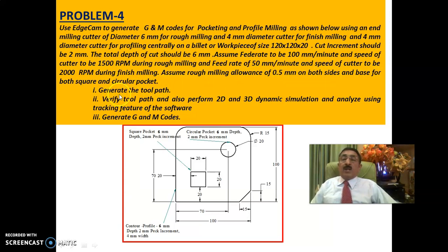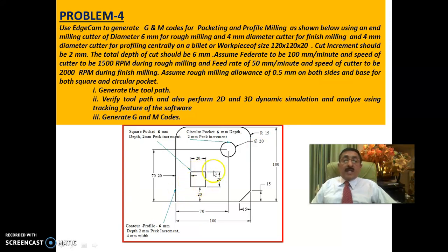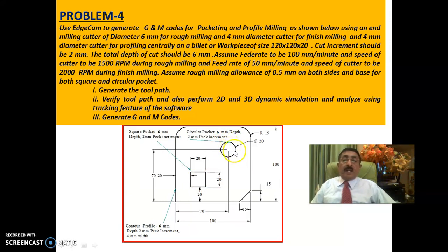Assume a rough milling allowance of 0.5mm on both sides and base for both square and circular pockets. You have to generate the toolpath, verify it, perform 2D and 3D dynamic simulation, and generate G and M codes. The 0.5mm allowance means after rough milling the depth will be 5.5mm, and the sides will be 19mm instead of 20mm - that 0.5mm is removed during finishing.